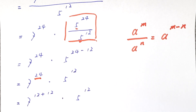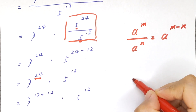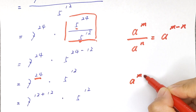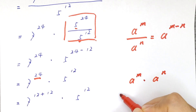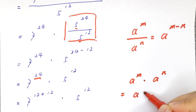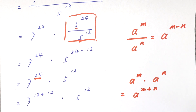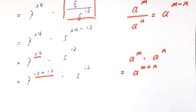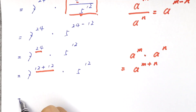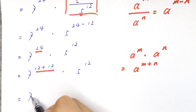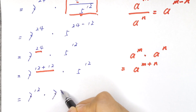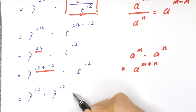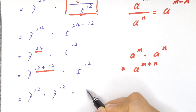We know that a to the power of m times a to the power of n is equal to a to the power of m plus n. So here, it is equal to 7 to the power of 12 times 7 to the power of 12 times 5 to the power of 12.